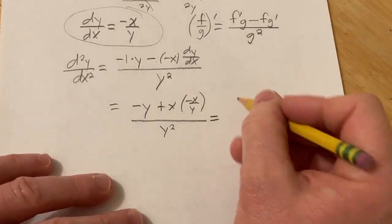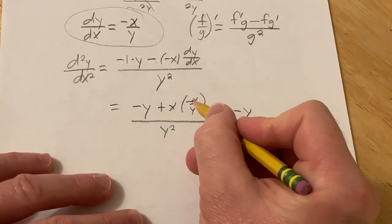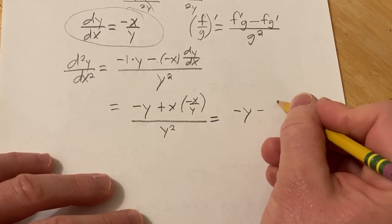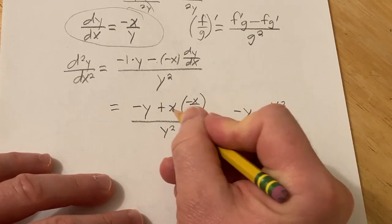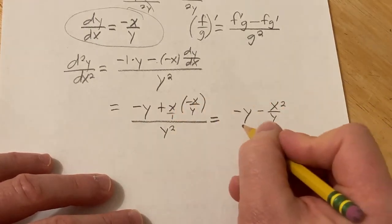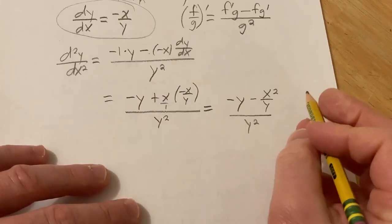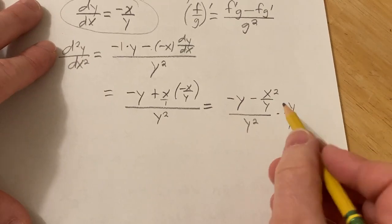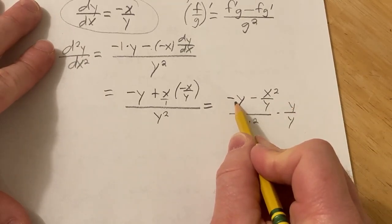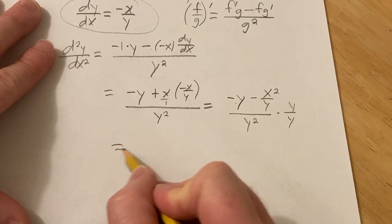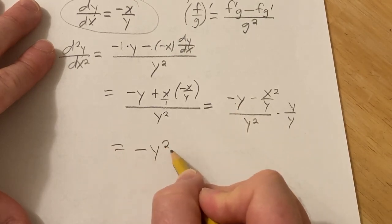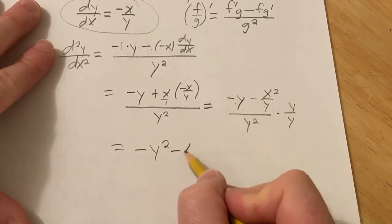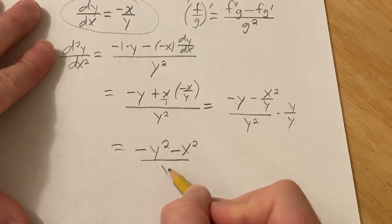This is equal to negative y. It's going to be minus x squared over y. It's really over 1. So when you multiply here, you get that over y squared. We can clean this up by multiplying by y over y, which is 1. When you do that, you distribute the y here. So that's going to give us negative y squared minus, these will cancel, x squared over y cubed.